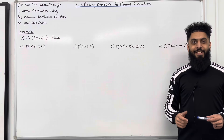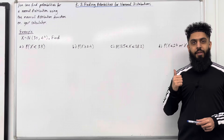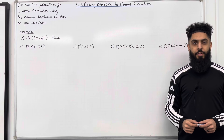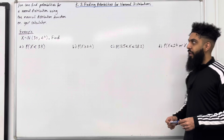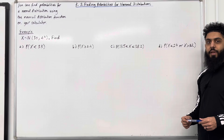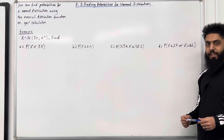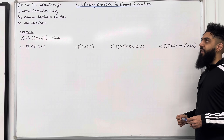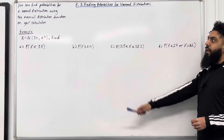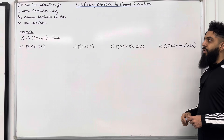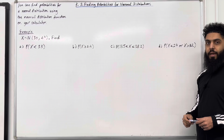Welcome back. In this teaching video, I'm looking at 3.2, finding probabilities for normal distributions. 3.2 represents Chapter 3, Section 2 of the Pearson A-Level Maths Year 2 Textbook. The key fact of this section is that you can find probabilities for a normal distribution using the normal distribution function on your calculator.